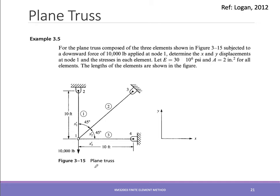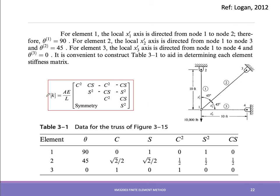Now we return to the full plane truss problem introduced at the start. The structure consists of three bar elements with a force acting at node 1, involving nodes 1 through 4 in a global XY coordinate system. We determine the stiffness matrices, displacements, and forces for each element and combine them into the global system.